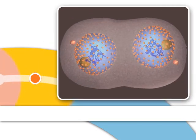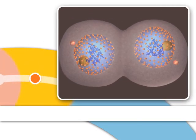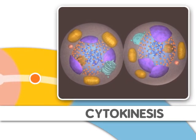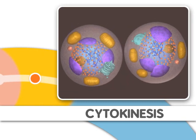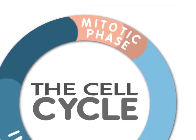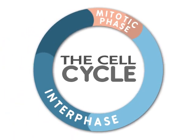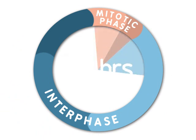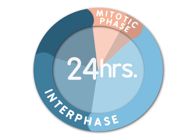After mitosis, two new cells are formed by a process called cytokinesis. Mitosis is only one part of what is called the cell cycle. For many eukaryotic cells, a cell is duplicated every 24 hours.